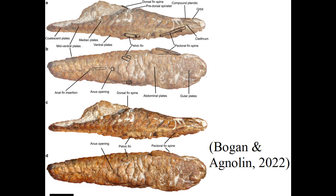Unlike the other specimens, this one has a preserved body. CT scanning is a really useful technology with fossils because it allows you to see inside and around specimens — even wet specimens — allowing you to see the different bones without actually having to go in and extract them physically.